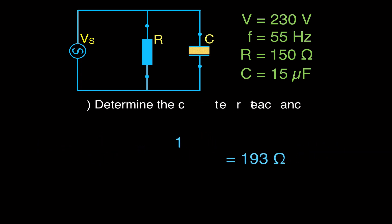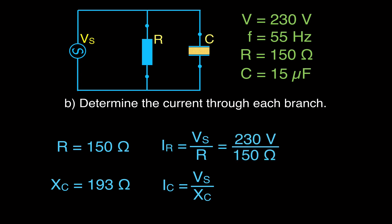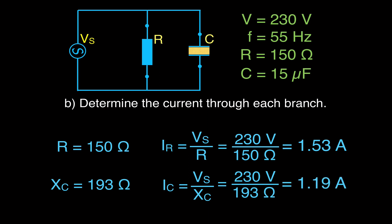Now we know the resistance of the resistor and the capacitive reactance of the capacitor, so we can get the current through each branch. Using Ohm's law, the current equals the voltage of the source divided by the resistance. Remember, in a parallel circuit the voltage across each branch equals the source voltage, which is different from series circuits. So it's 230 divided by 150, giving a resistor current of 1.53 A, and 230 divided by 193, giving a capacitor current of 1.19 amperes.